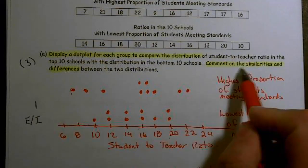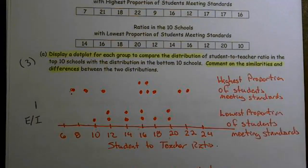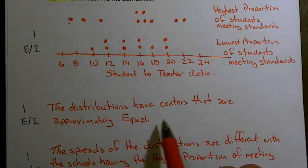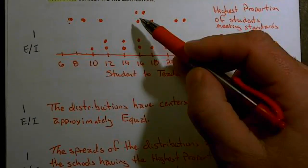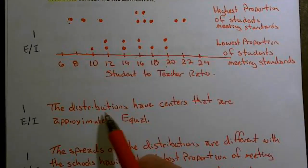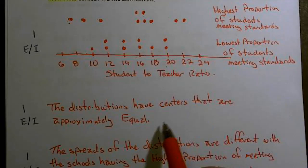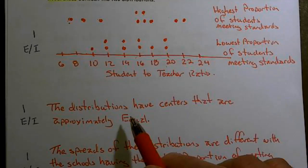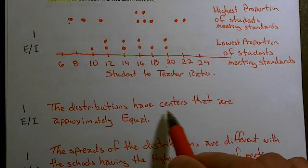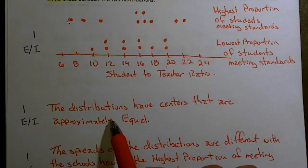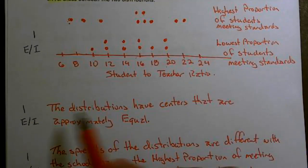The question also says to comment on the similarities and differences. When I look at the dot plots, the centers are about the same. The distributions have centers that are approximately equal. You could have calculated the mean and median and quoted those values, but really we just needed to say the centers are approximately equal. That was full credit — you said something along these lines, or you didn't.